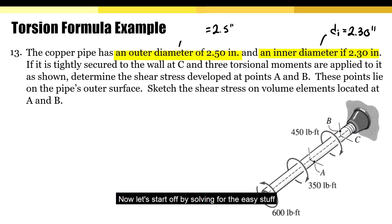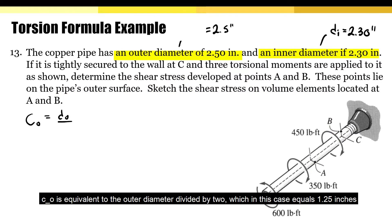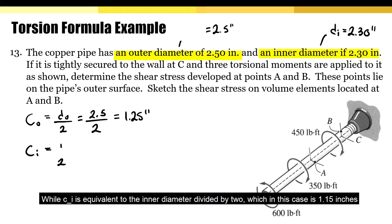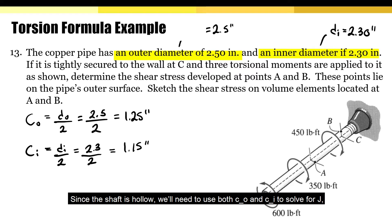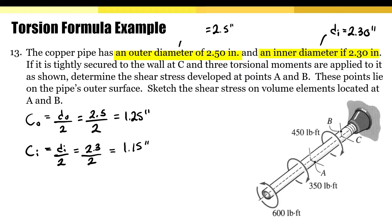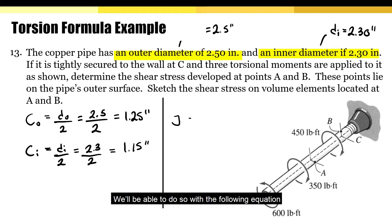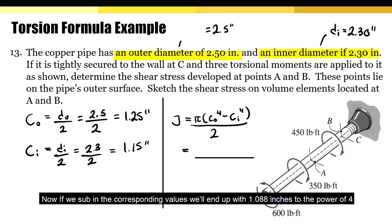Let's start off with the easy stuff. The first thing we'll look at is CO and CI. CO is equivalent to the outer diameter divided by 2, which in this case equals 1.25 inches. CI is equivalent to the inner diameter divided by 2, which in this case is 1.15 inches. Since the shaft is hollow, we'll need to use both CO and CI to solve for J using the following equation. Substituting in the corresponding values, we'll end up with J = 1.088 inches to the power of 4.